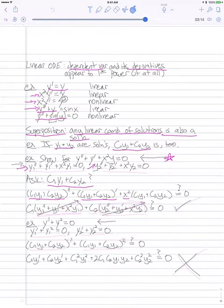And what we're going to do is just collect things by their subscripts. So if I collect all the terms with y1 in them, I get c1 times y1 double prime plus y1 prime plus x squared y1.